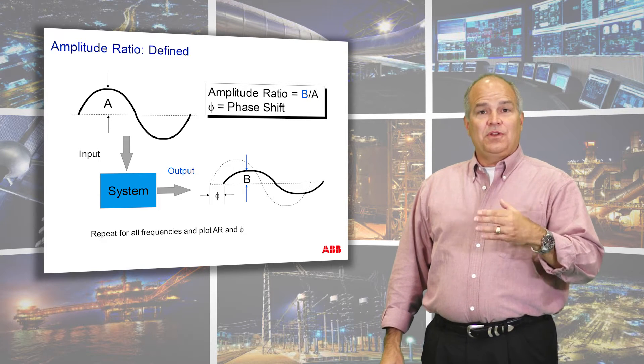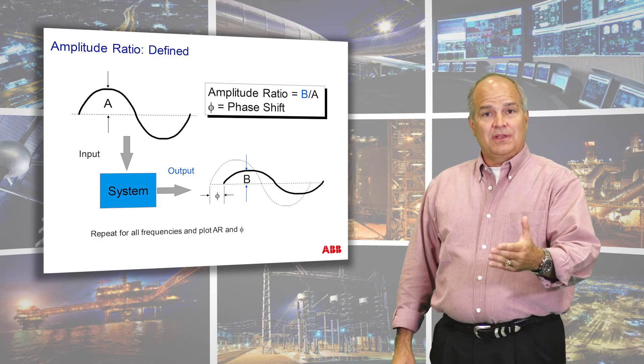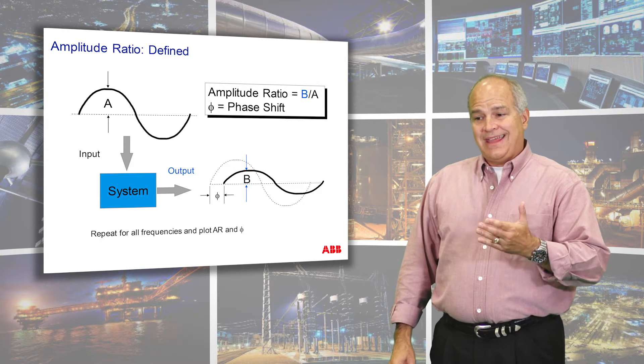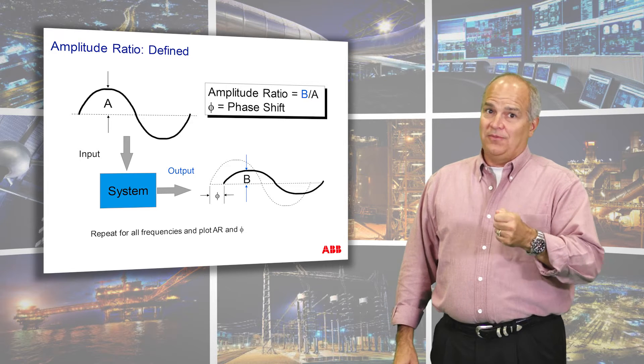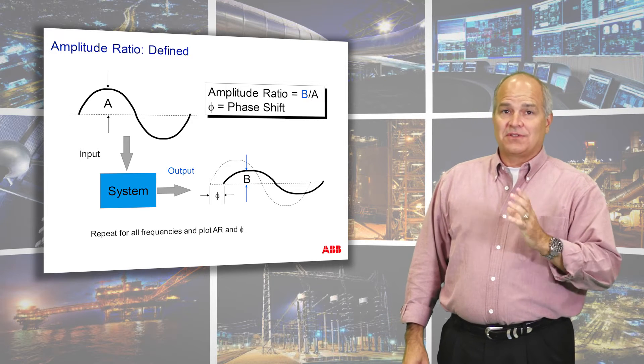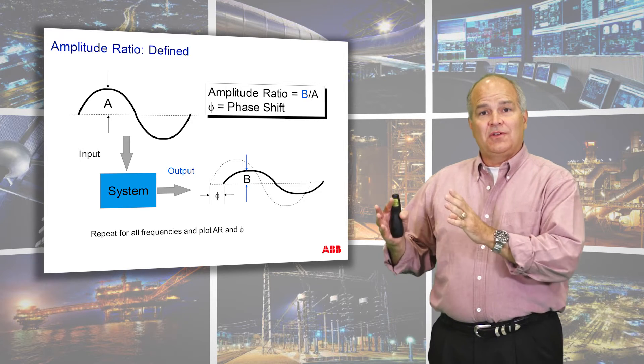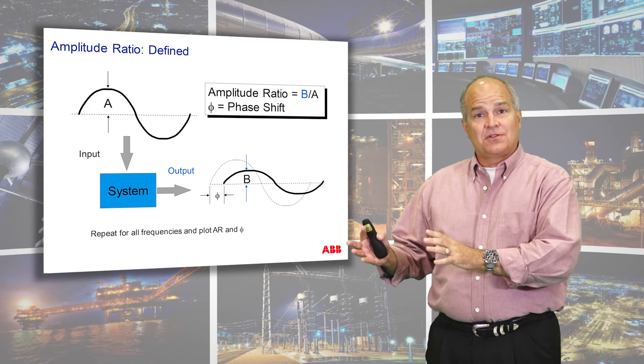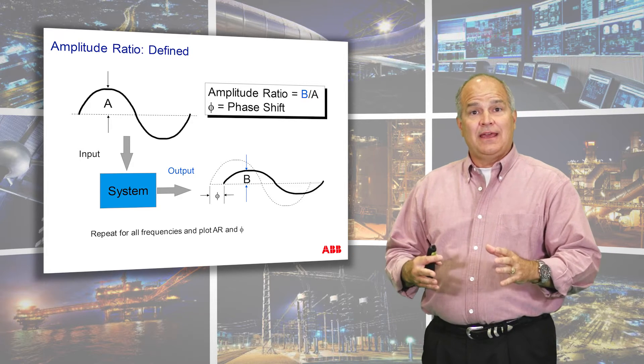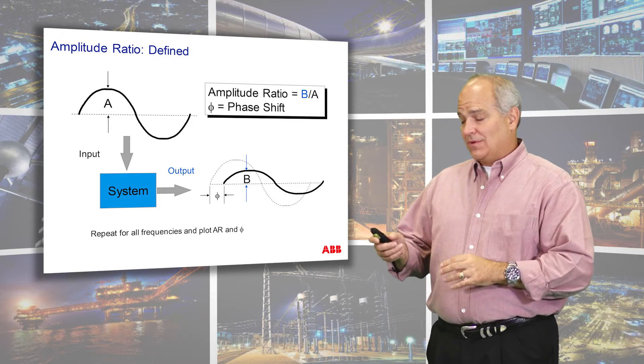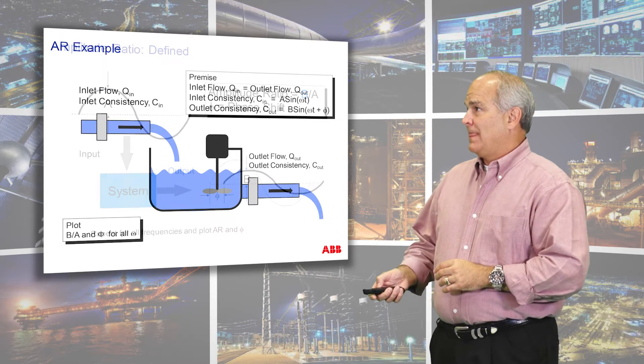This is very important when you go to do troubleshooting. You just can't always make the loop faster and faster. Sometimes you have to go and find that disturbance and track it down. And that's what we're going to get into.